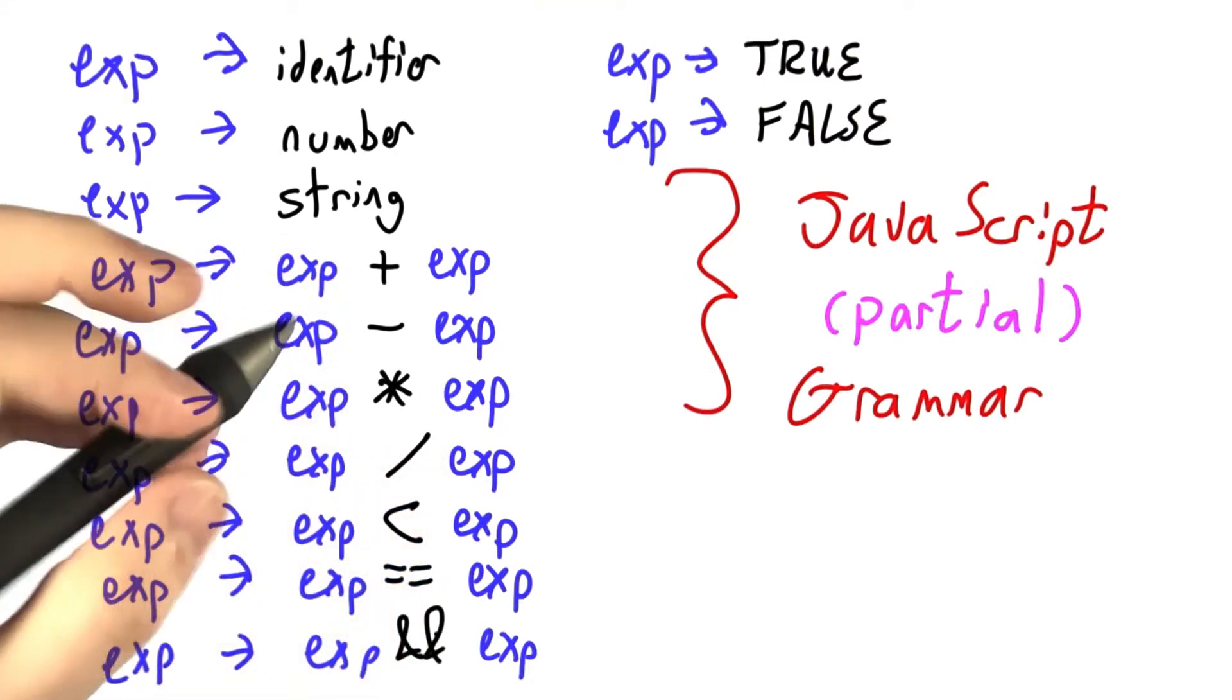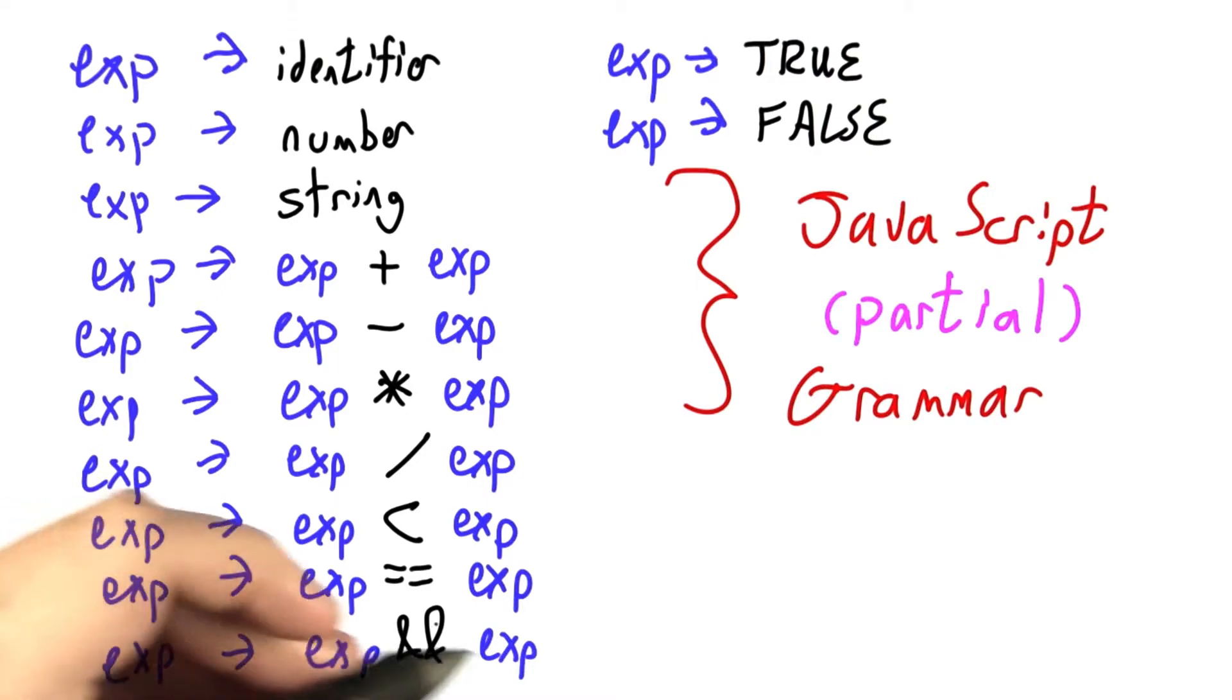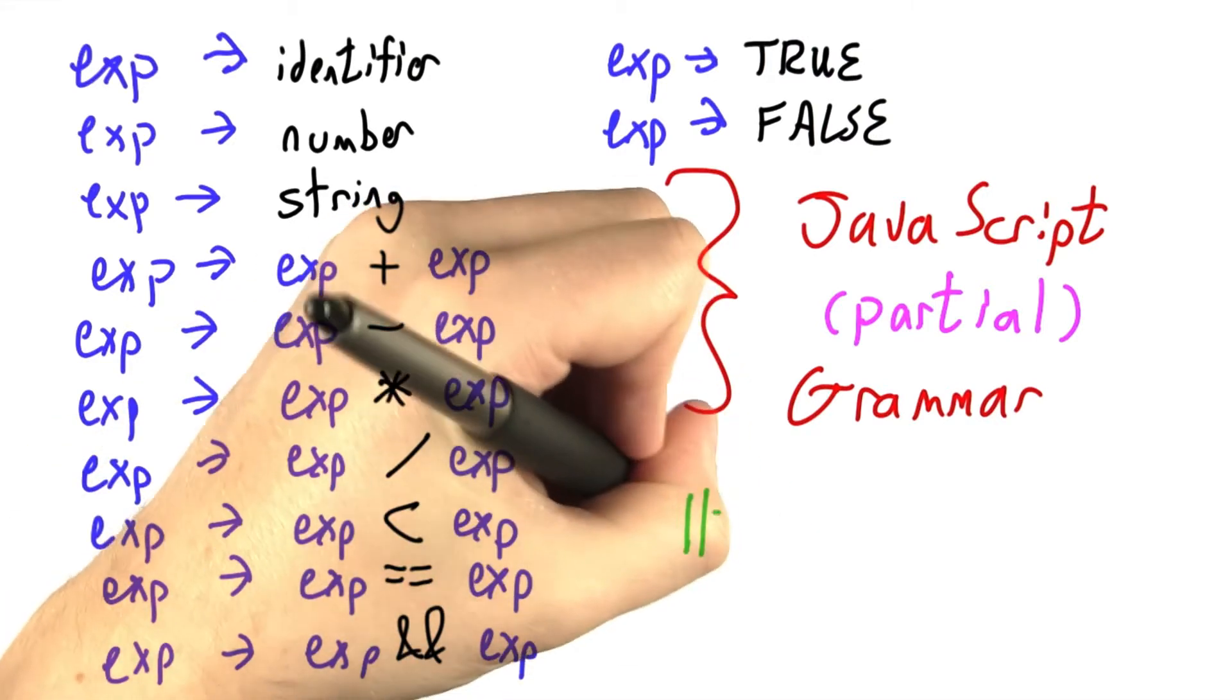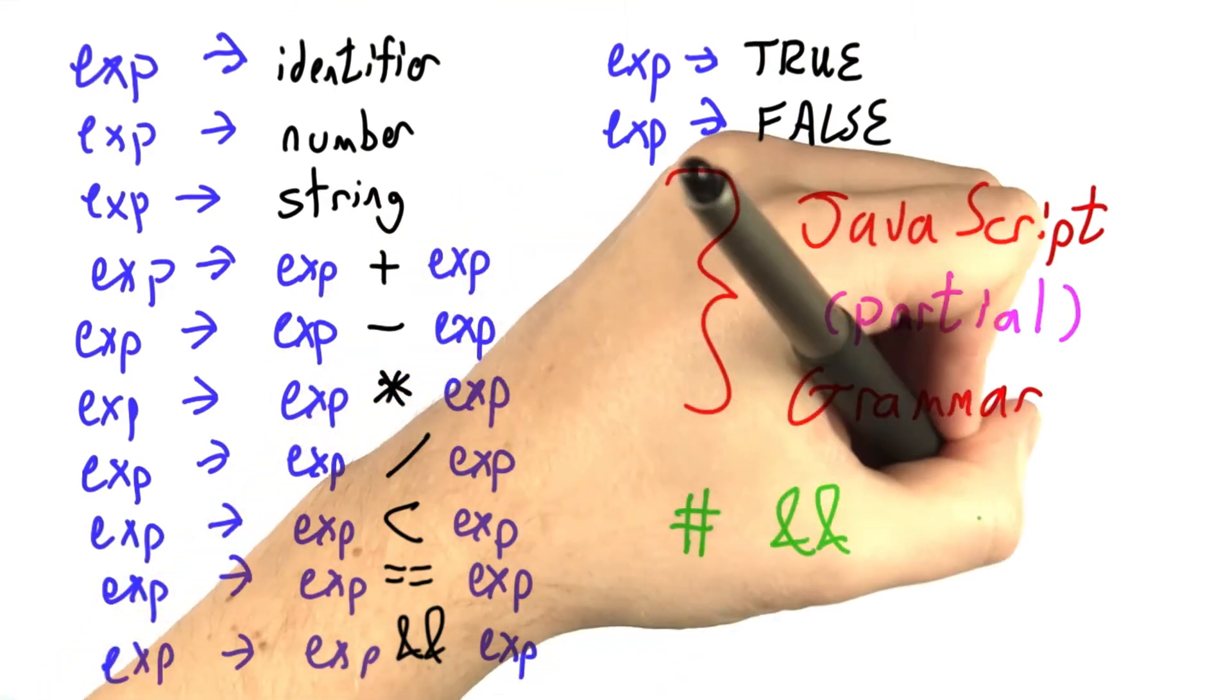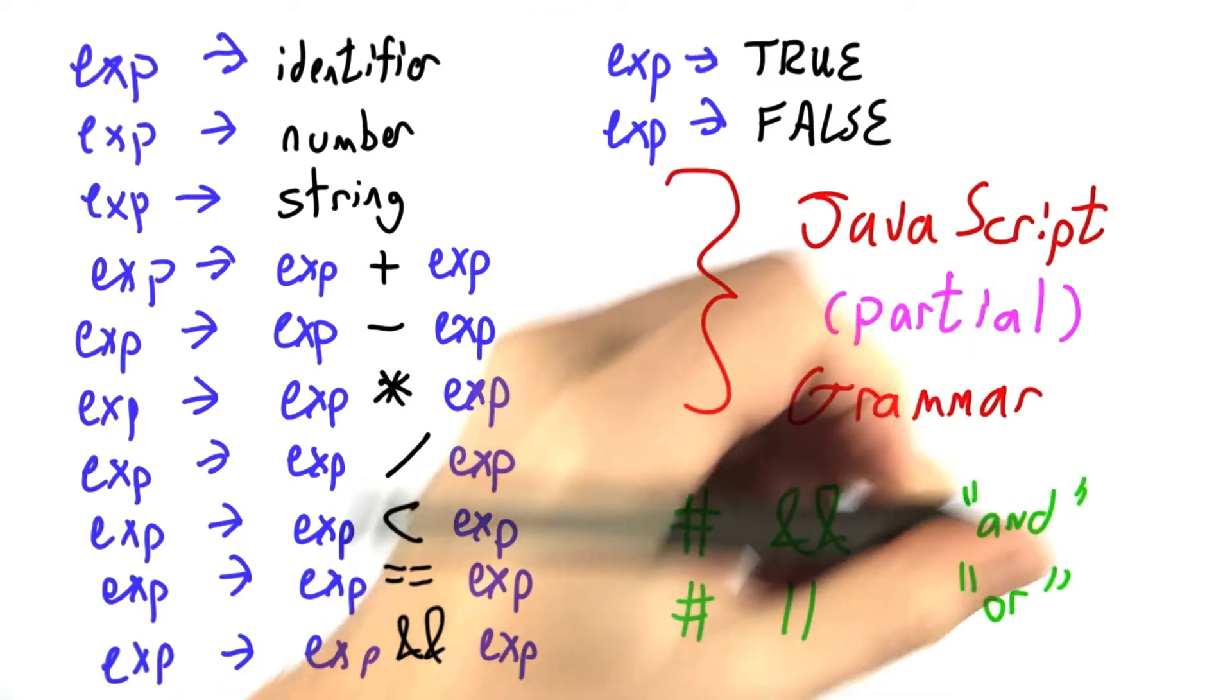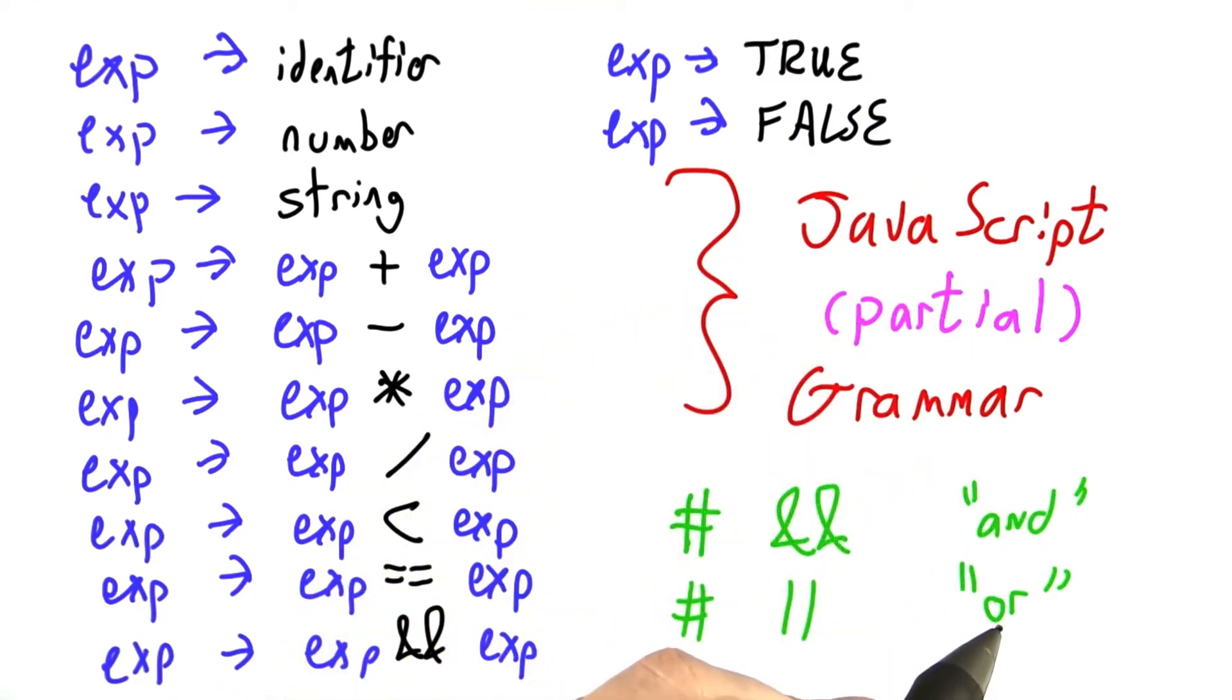And if they're Booleans, you can check to see if the first is true and the second is true. Just a little note, if you haven't run into this before, two ampersands means and, two vertical bars means or. So in Python where you might write and or or, in JavaScript you use these binary operator symbols instead.